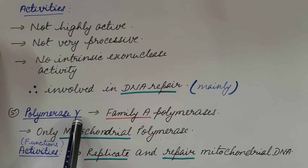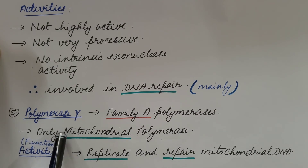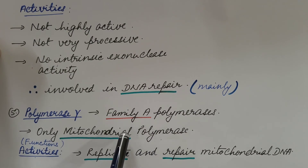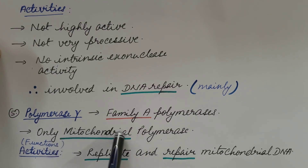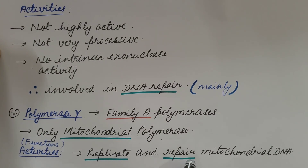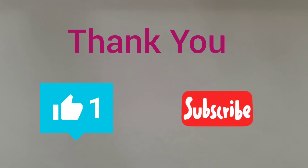Fifth is DNA polymerase gamma. It is a member of the family A polymerases. It is the only mitochondrial polymerase — that is, it is the only polymerase present in mitochondria, which also consists of DNA. It replicates and repairs mitochondrial DNA. Since it is the only mitochondrial DNA polymerase enzyme, it performs all functions related to DNA replication and repair. It has 3'-5' exonuclease activity.